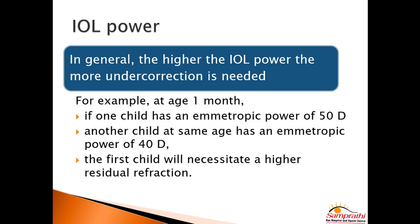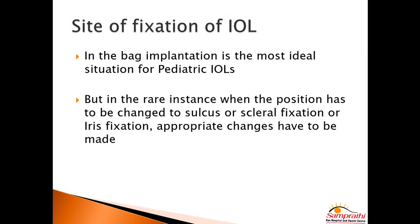In general, the higher the IOL power, the more under-correction is necessary. For example, in a one-month-old child, if one eye has an emmetropic power of 50 diopters and another has 40 diopters, you must deduct more for the first than the second. Also, all calculations assume in-the-bag implantation; if you must place the lens in the sulcus, use an iris-claw lens, or make other changes, adjust the IOL power accordingly.